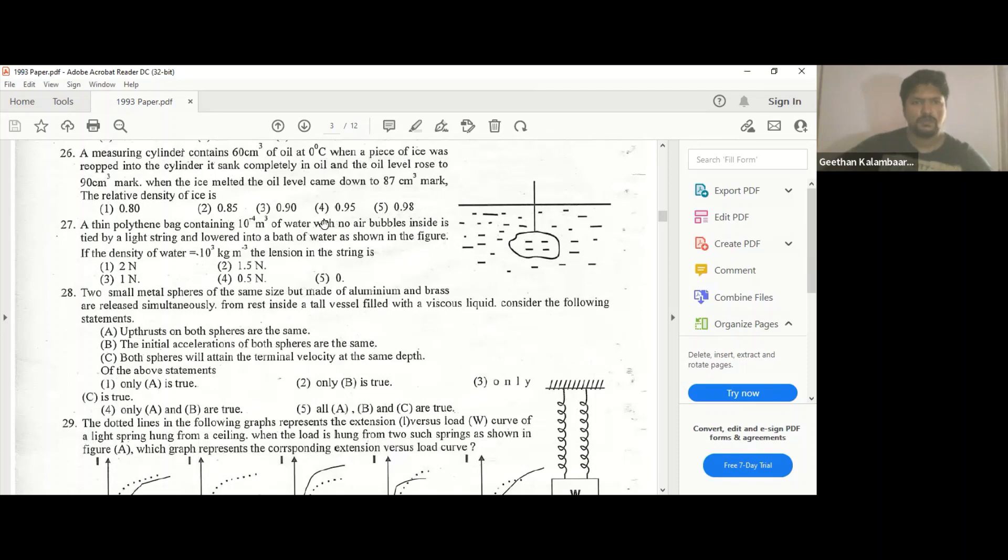Measuring in the container 60 cubic cm of oil at 0 degrees celsius. When a piece of ice was dropped into the cylinder, it sank completely in the oil and the oil level rose to 90 mark.